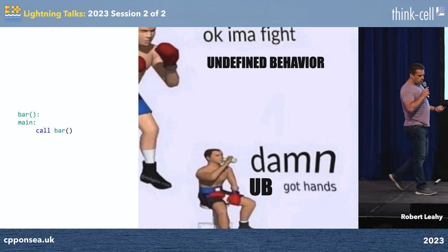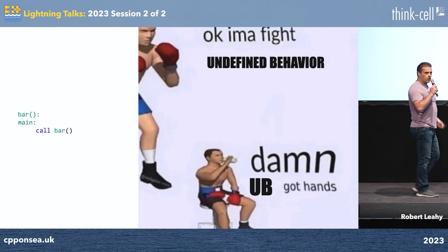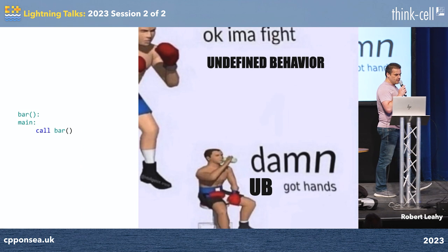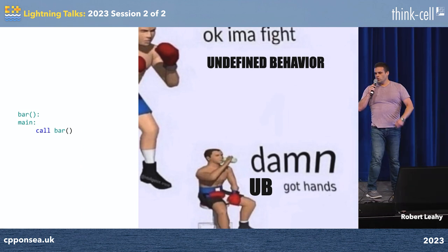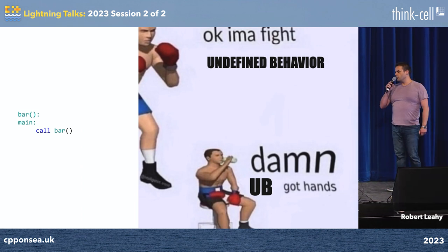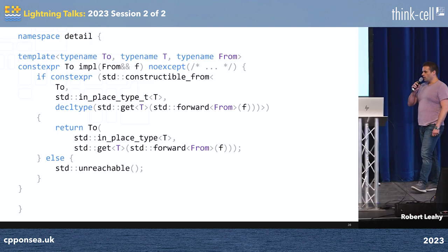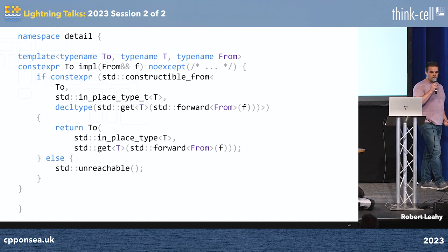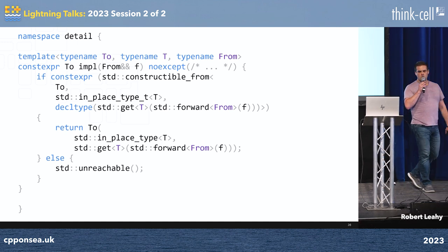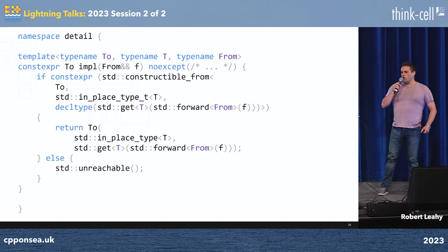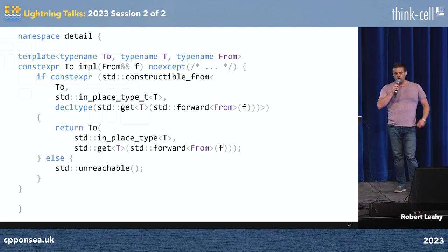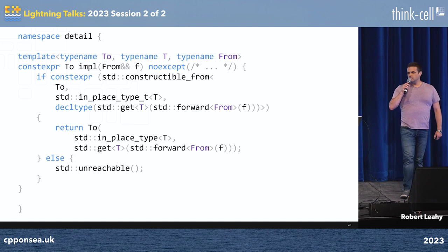Because what we need is a separate source of truth about the active alternative and the value category that's actually coming in. So what we need to do is re-implement all of the internals of std::visit. We're going to take the visitor, extract it into an impl function we can take the address of — so we can't use overloads anymore. We're going to use if constexpr to disambiguate between the possible and impossible situations.